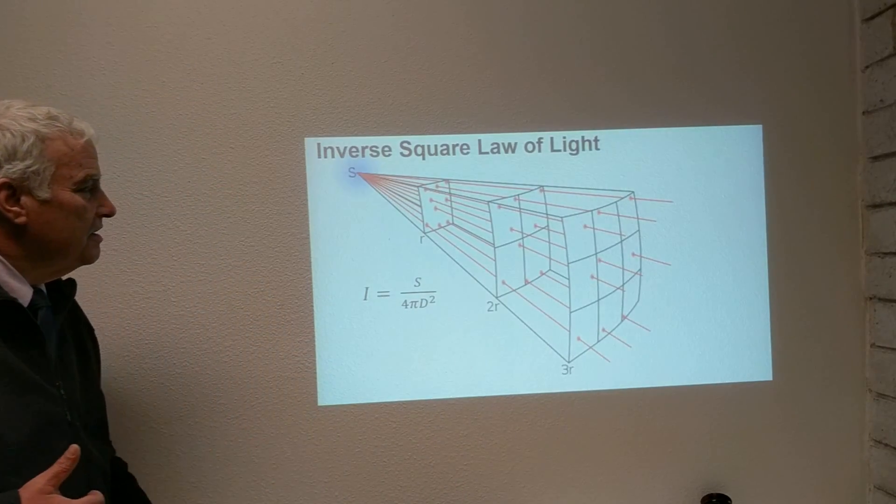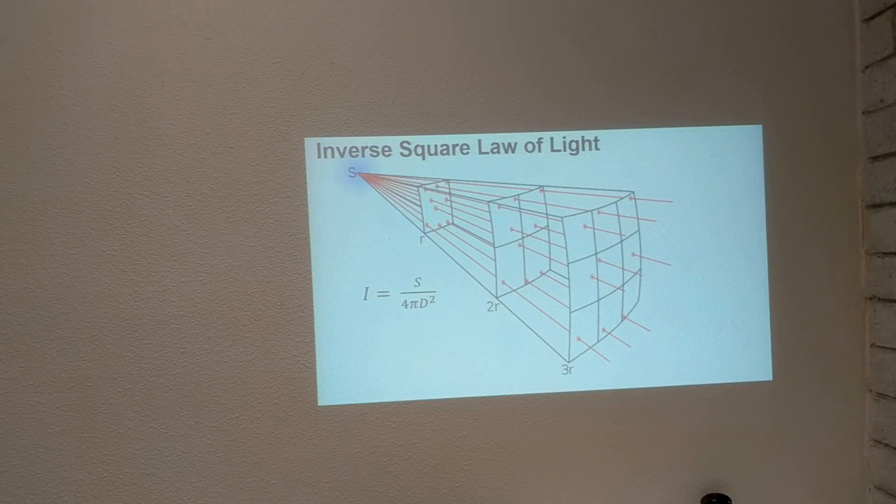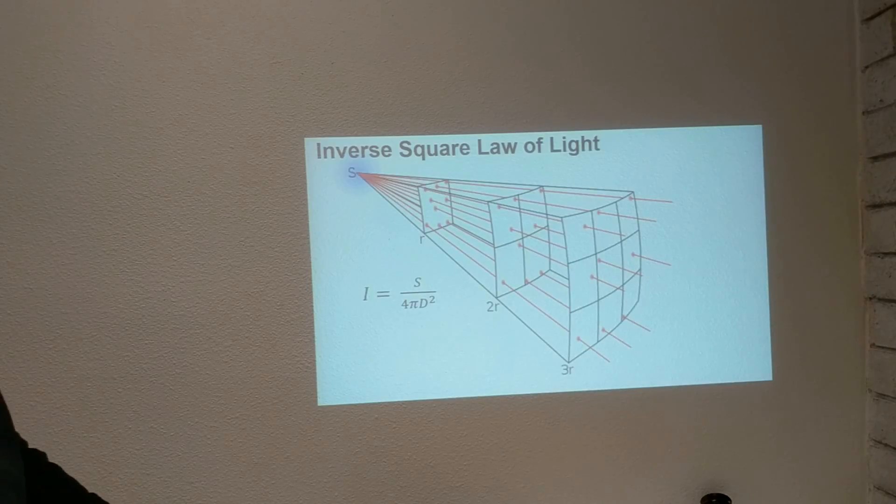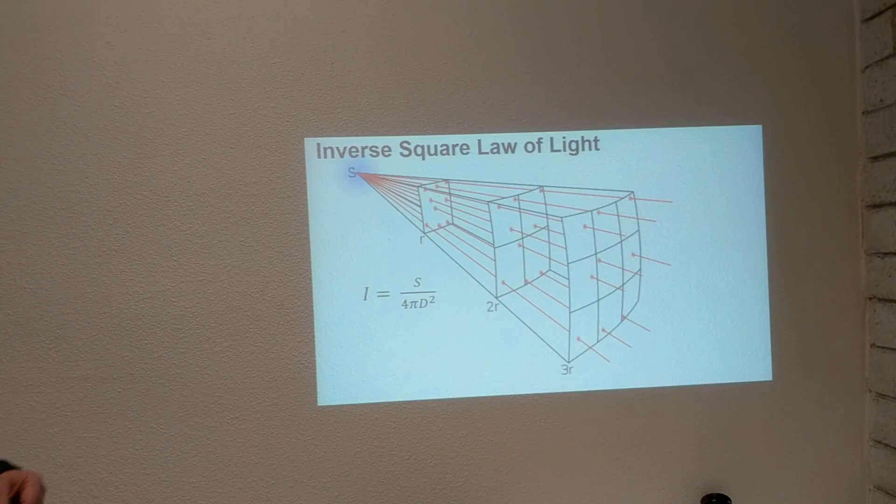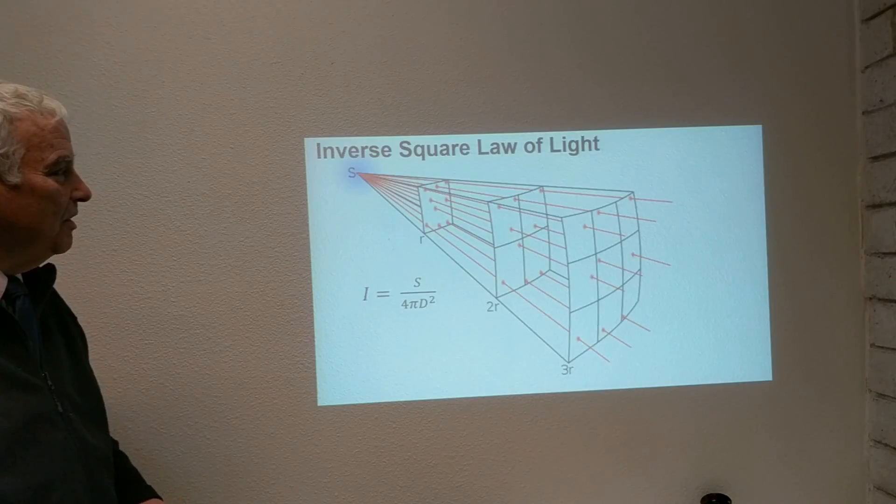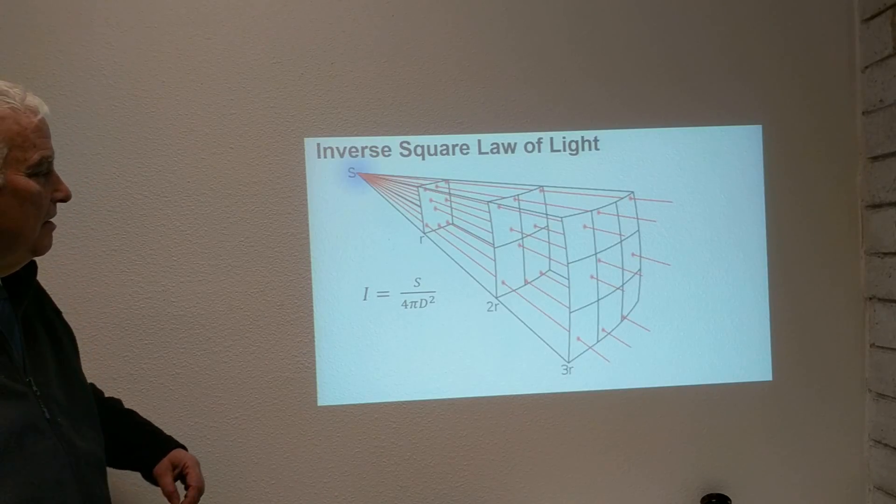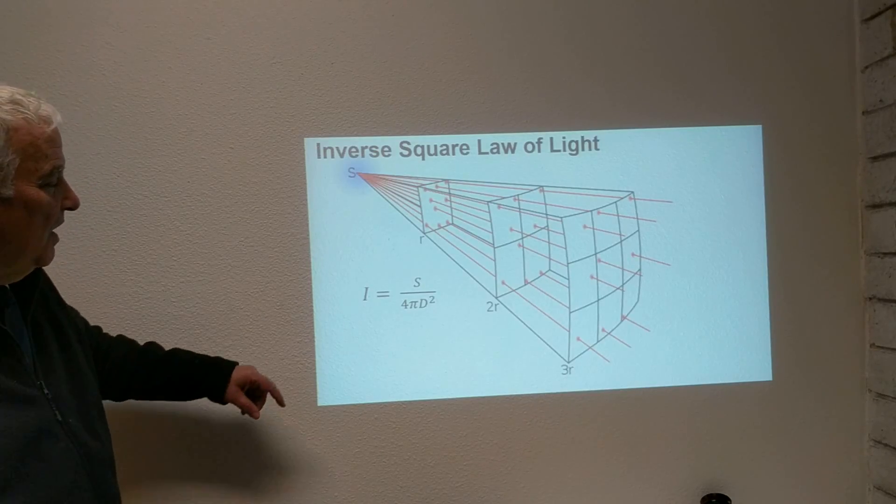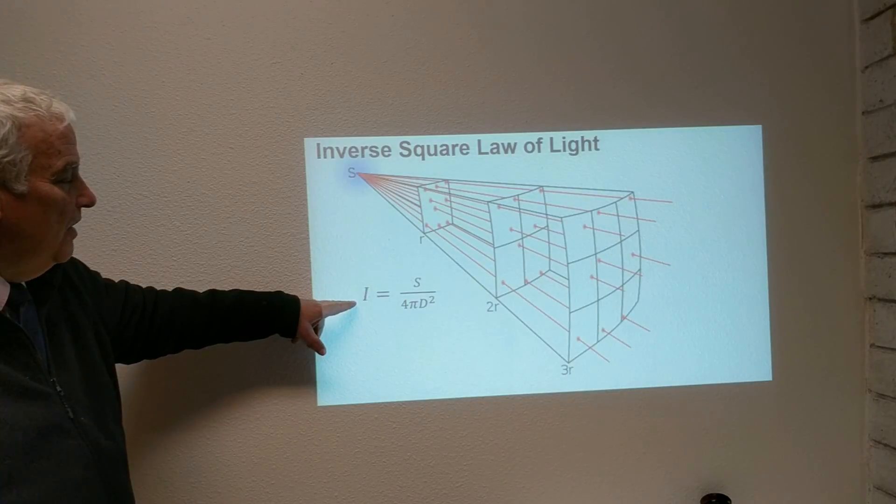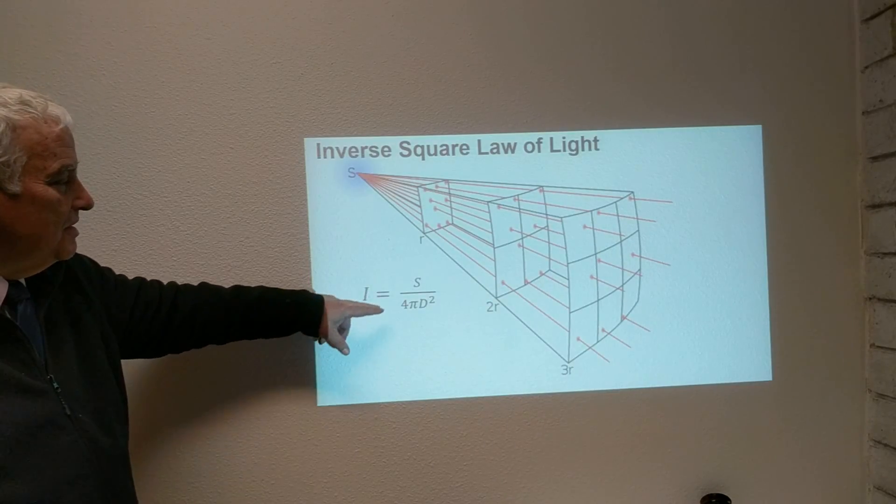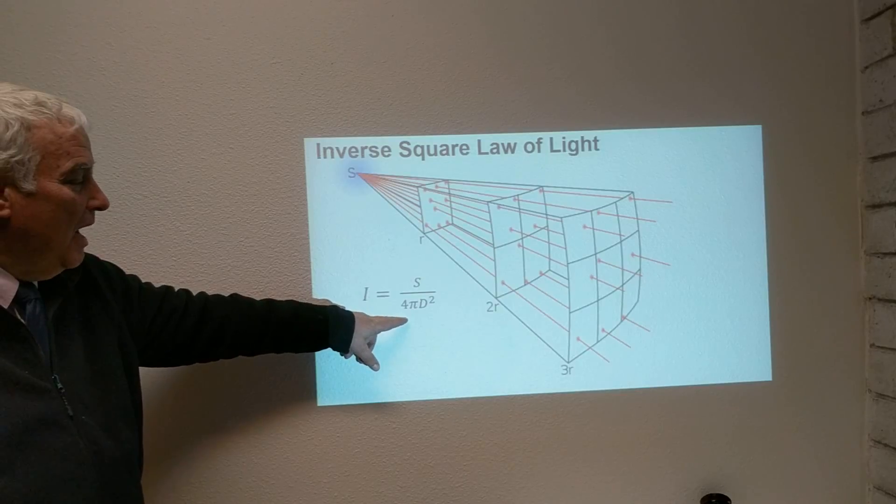And the surface of a sphere as any surface goes as the square of the area, in this case the diameter of the sphere. So the intensity of the star is the intensity at the source divided by four pi times the distance squared.